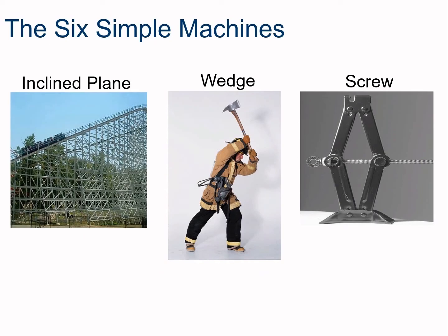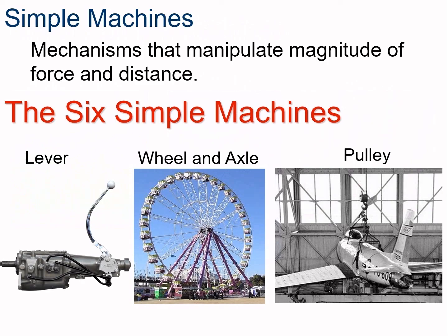There are two families. The inclined plane, the wedge, and the screw are all members of one family. The lever, the wheel and axle, and the pulley are members of the other family. This video is going to concentrate on the lever, but we're also going to talk about mechanical advantage, ideal mechanical advantage, efficiency, work, torque, and moment.